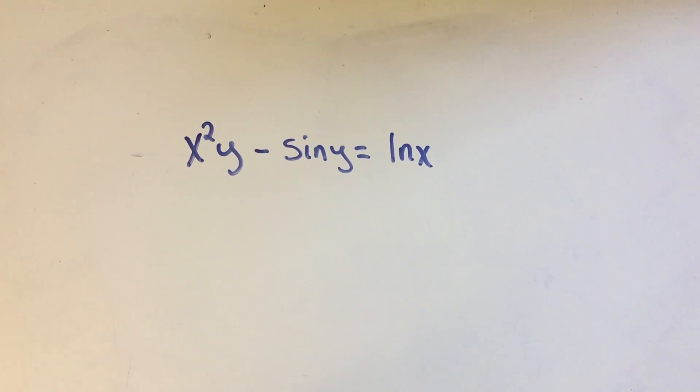So I'm gonna show you an easy way to do it. First thing you want to do, you want to move everything to one side of the equation. So I'm just gonna subtract the log x over to the left-hand side. It'll just look like this. So we want it set equal to zero.